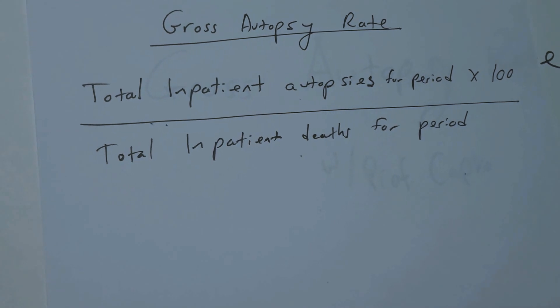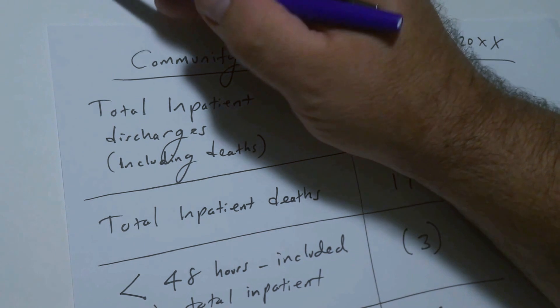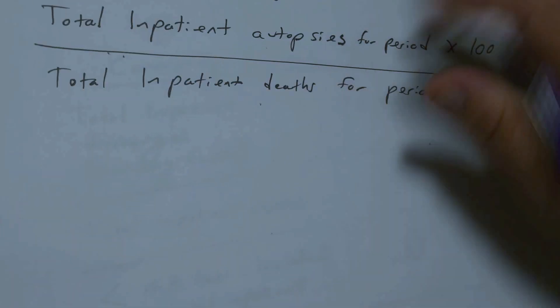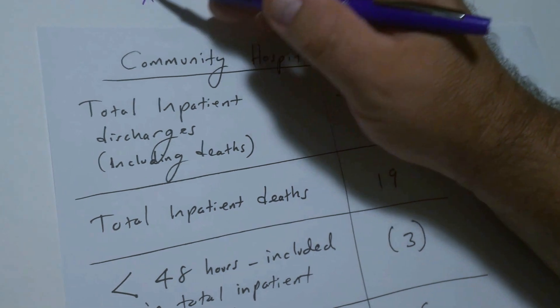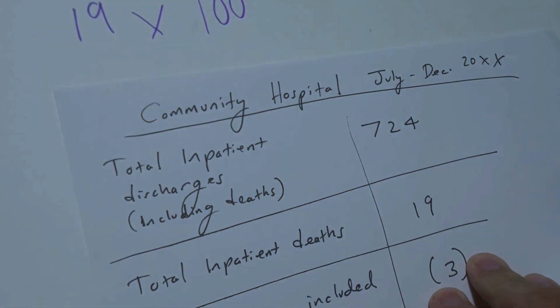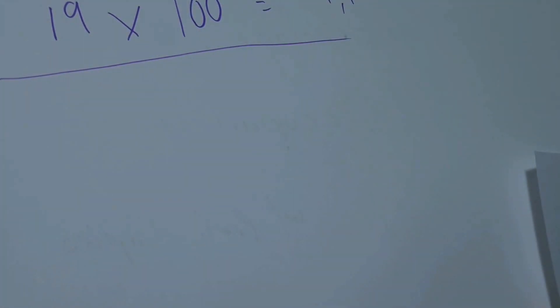Alright, so let's first calculate the gross death rate. If we look back at our data, the total number of deaths we had is 19. So we're going to take this and multiply it by 100 because we're looking for a percentage. 19 multiplied by 100 is going to equal 1900 in our numerator. In our denominator you look at the total inpatient discharges including deaths as 724.